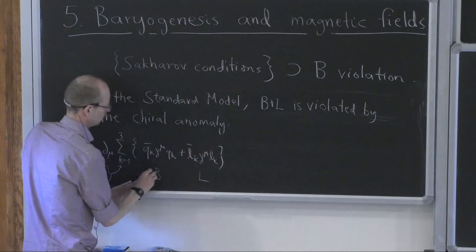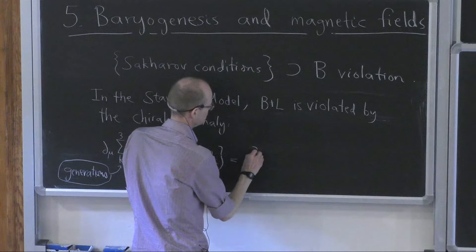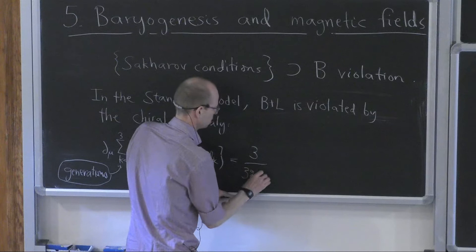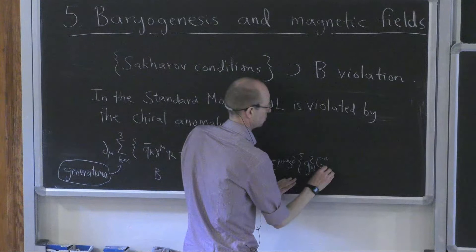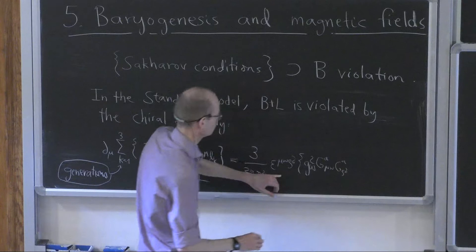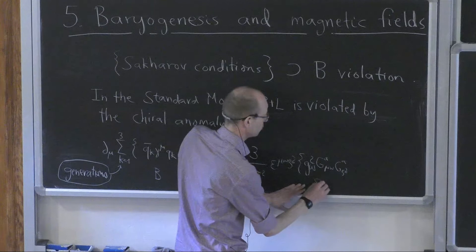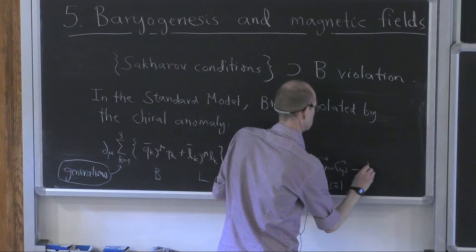The quark part is the baryon number B and the lepton part is the lepton number. This is then equal to 3 — where the 3 is the same as the number of generations — times some factors: 32 pi squared, epsilon mu nu rho sigma, and then two terms. One is from the rho sigma field strength — these are topological terms — this one is from the weak gauge group SU(2), and then there's a minus from the hypercharge.